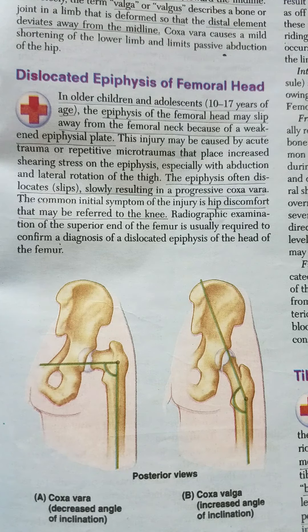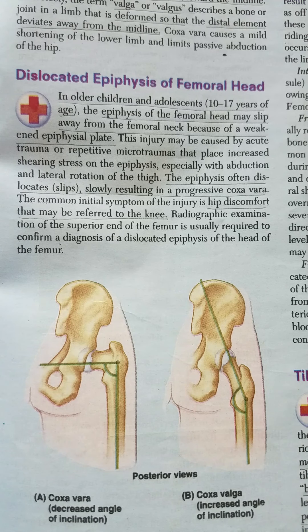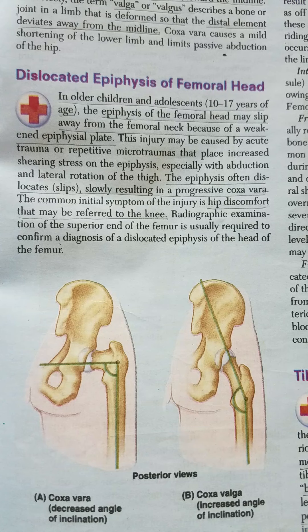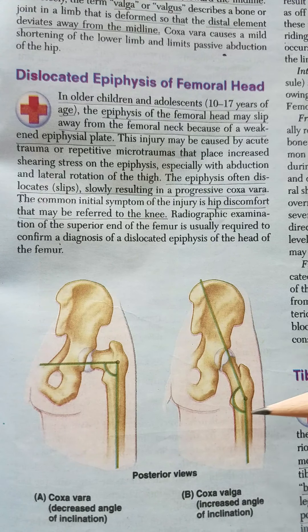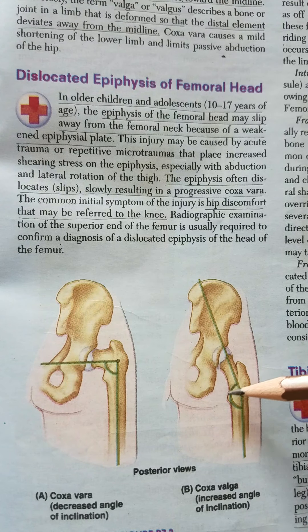On the other extreme, you have a condition known as coxa valga. As you can see here, in this condition the angle of inclination increases much more than the average of 126 degrees. Valga is a Latin term indicating a deformity in which the distal element moves away from the midline. So in coxa valga, the angle of inclination is usually more than 135 degrees.